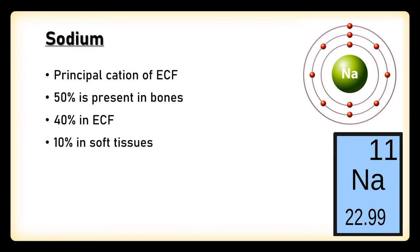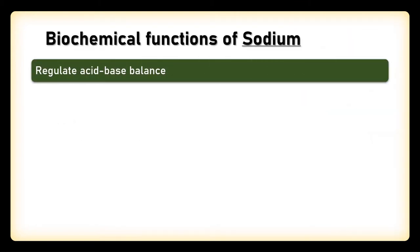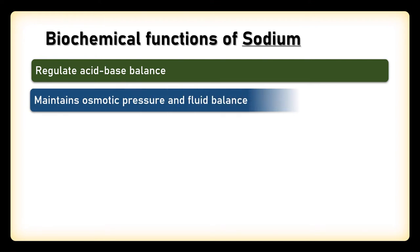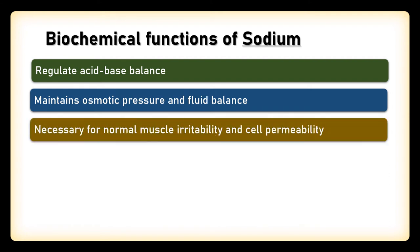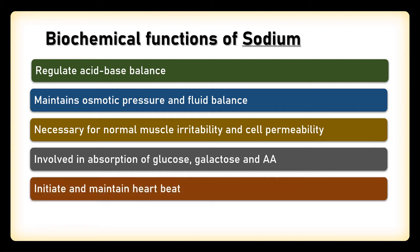Let's see what are the different biochemical functions carried out by sodium. Sodium helps to regulate the acid-base balance as it is the chief cation of the extracellular fluid. Sodium is required for maintenance of osmotic pressure and fluid balance. It is also necessary for normal muscle irritability and cell permeability. Sodium is involved in the absorption of glucose, galactose, and amino acids from the intestine. It also initiates and maintains heartbeat as it helps to generate the signal in the SA node and AV node.